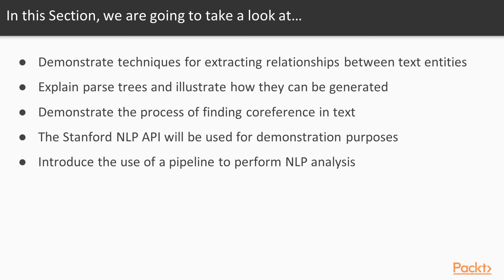To perform this sort of activity, we'll be using the Stanford NLP API — both for generating our parse trees and for finding our co-references. Also, in the process, we'll demonstrate the use of a pipeline, a Java concept which can make the actual execution of code more straightforward and easier to follow. Stanford does a very good job at implementing a pipeline.